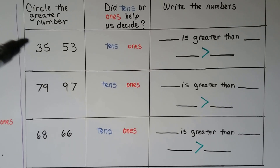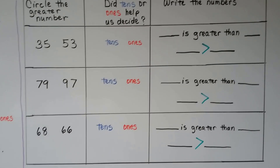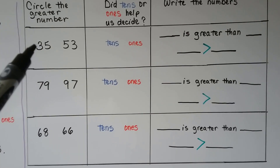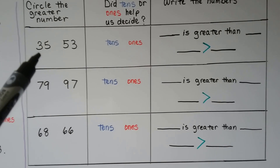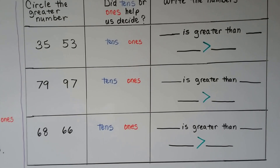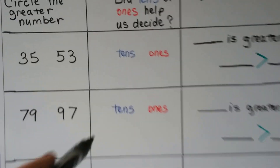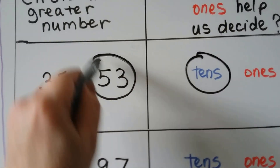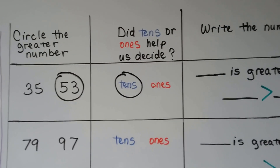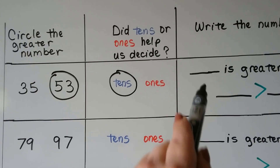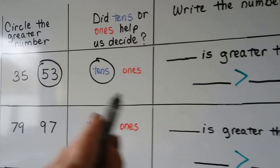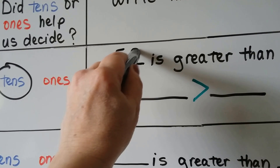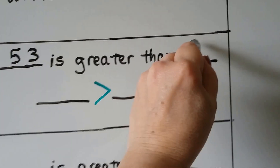Which is the greater number, 35 or 53? We can compare the tens. This has only 3 tens and this has 5 tens. So yes, the tens helped us. 5 tens is more than 3 tens, so 53 is larger. 53 is greater than 35.